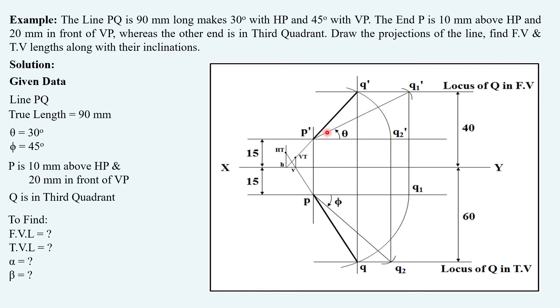So this is our normal question which consists of the line given in a single quadrant whereas we have the line in two different quadrants. So P' and P are still going to remain in the same positions because P is still in the first quadrant whereas Q is in third quadrant.